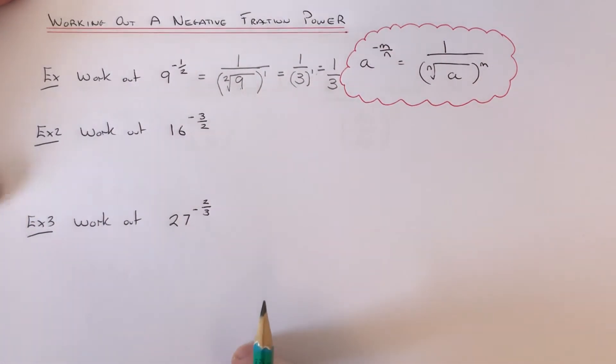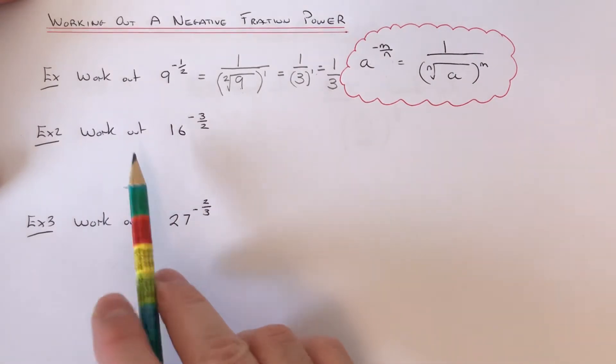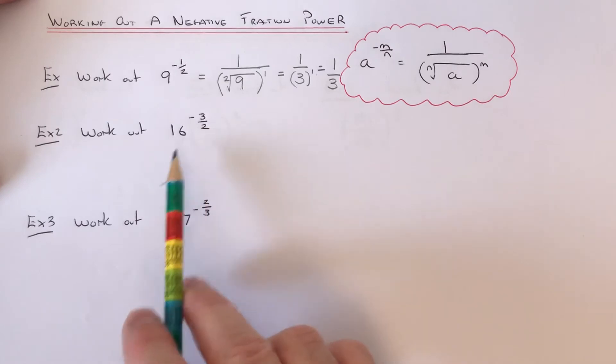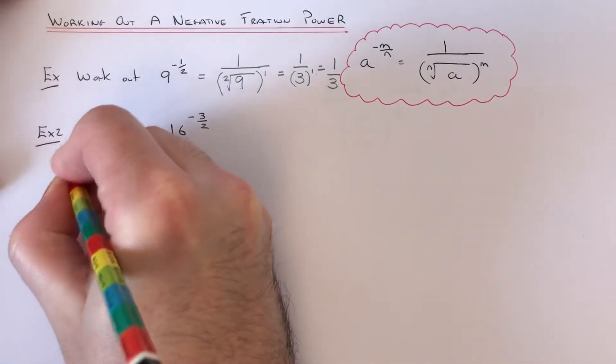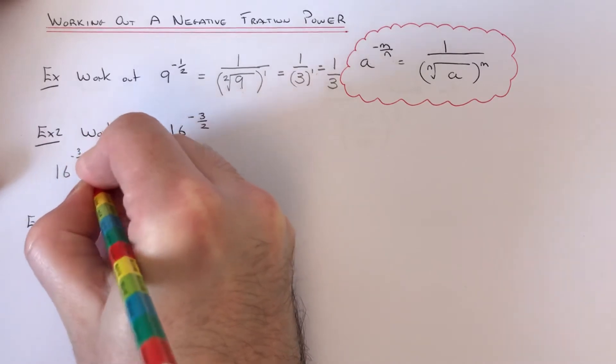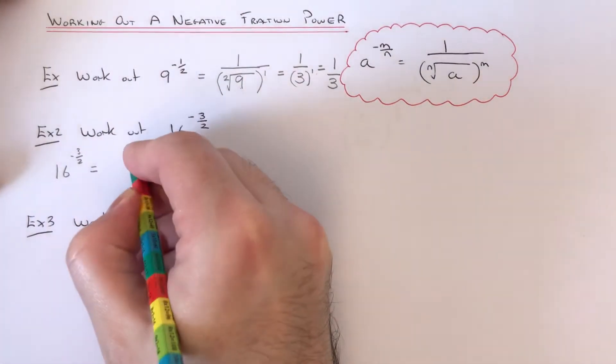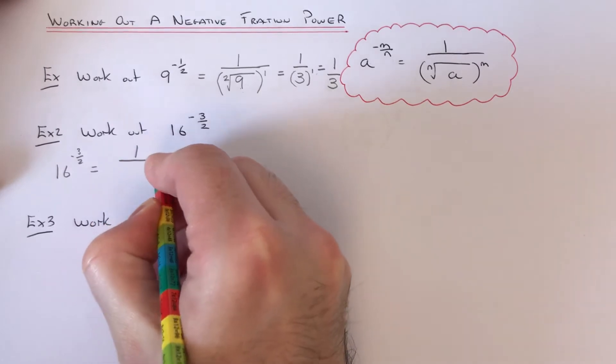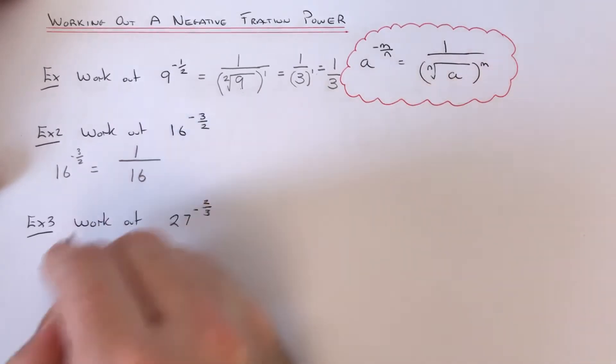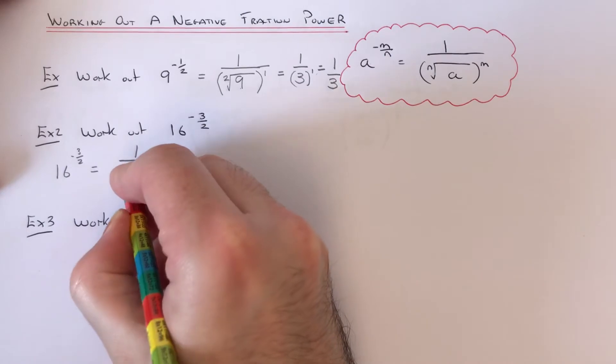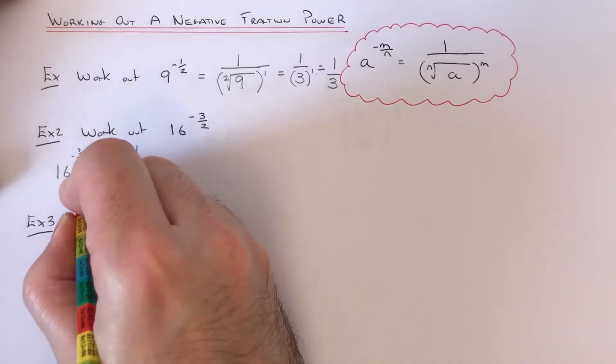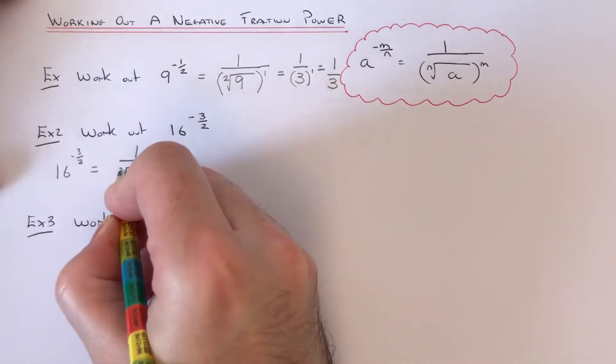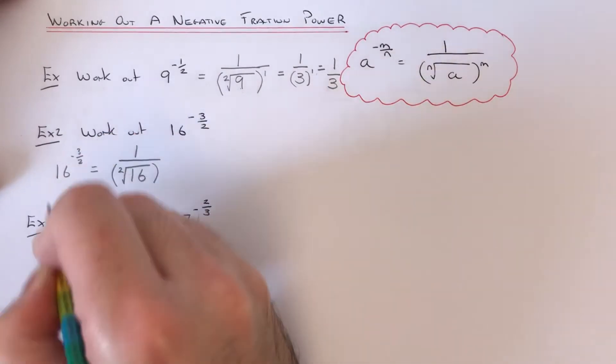Let's have a look at example 2. Now we've got to work out 16 to the power of minus 3 halves. So again, if we follow the rule in the red cloud, put 1 on the numerator, then write the 16 on the denominator. Put a root over the 16. The denominator of our fraction is 2, so put the 2 here, and the numerator of our fraction is 3.